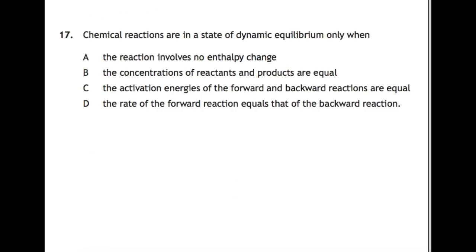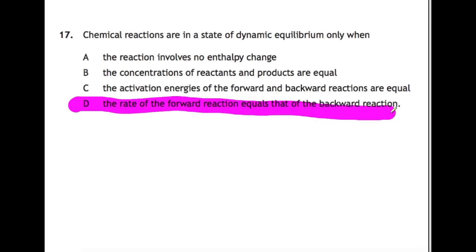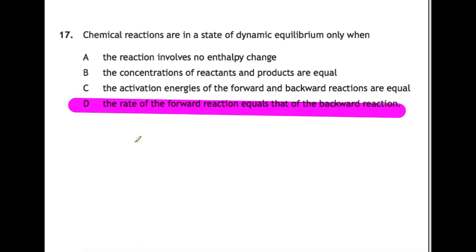Dynamic equilibrium is another definition you need to learn. Dynamic equilibrium occurs when the rate of the forward reaction equals that of the backward reaction. The concentrations of reactants and products can be equal, but this doesn't always happen, so it cannot be B.